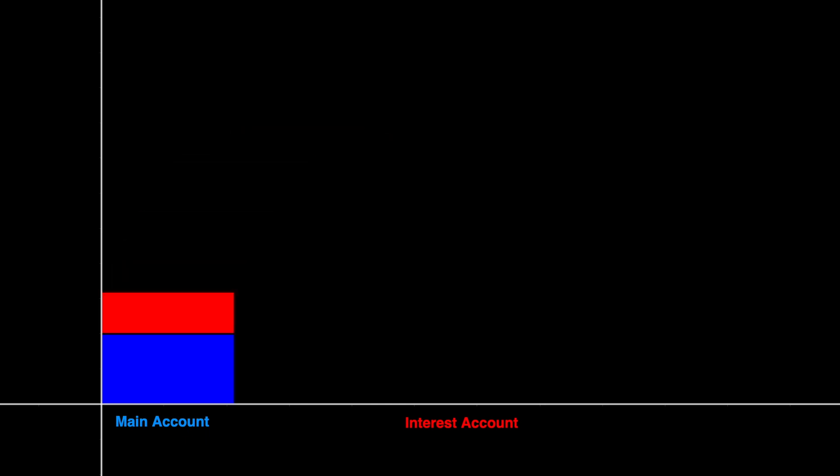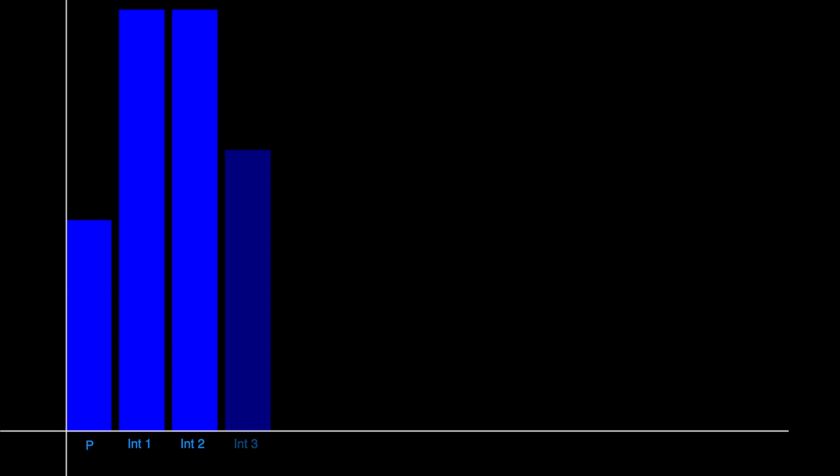Instead of repeatedly sweeping the earned interest into the main account at definite time intervals, let's keep track of the different degrees of interest. First, there's the principal itself, the primary interest, secondary interest, third-degree interest, and so forth.